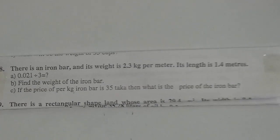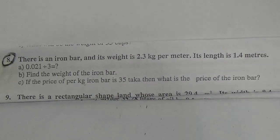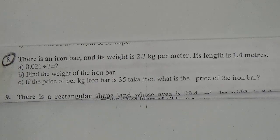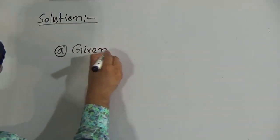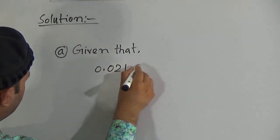My dear students, let us start our class. Look here — there is question number 8. There is an iron bar and its weight is 2.3 kg per meter. Its length is 1.4 meters. Question A is: 0.021 divided by 3 equals what?